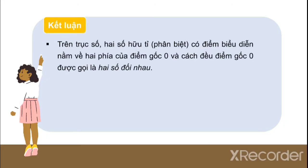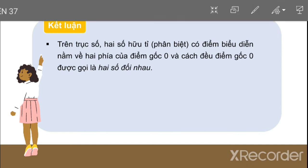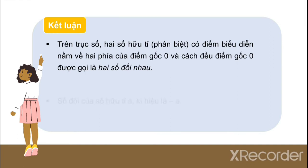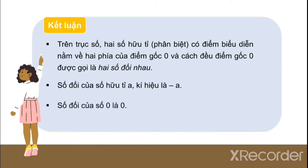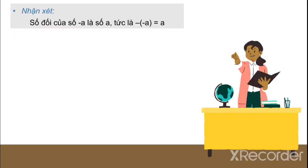Kết luận: Trên trục số, 2 số hữu tỉ phân biệt có điểm biểu diễn nằm về 2 phía của điểm gốc O và cách đều điểm gốc O được gọi là 2 số đối nhau. Số đối của số hữu tỉ A ký hiệu là âm A (trừ A). Số đối của 0 là 0.